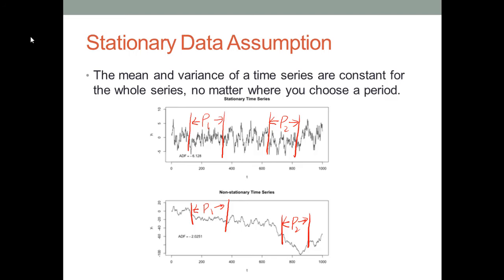If the time series is not a stationary data set, you should see an obvious trend — either decreasing or increasing — in the plot chart, like you can see in the bottom chart on this slide. The bottom chart is not a stationary data set. Why? If I randomly choose two periods, say p1 and p2, you can clearly see that the mean of p2 is less than the mean of p1. So the time series in the bottom chart is not a stationary data set.